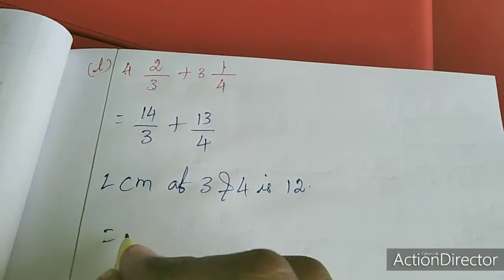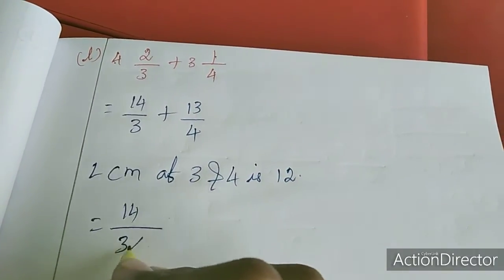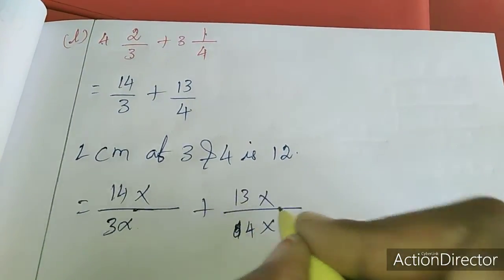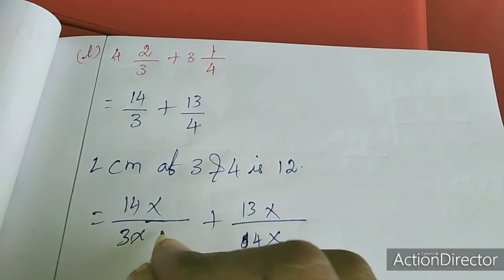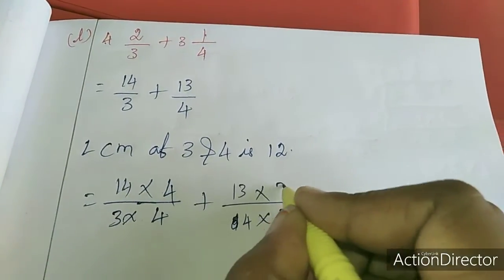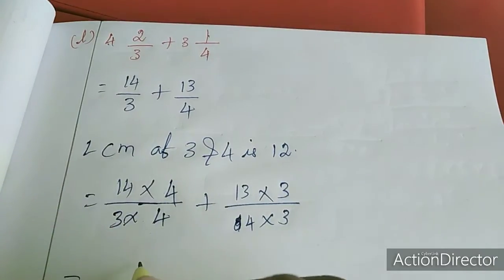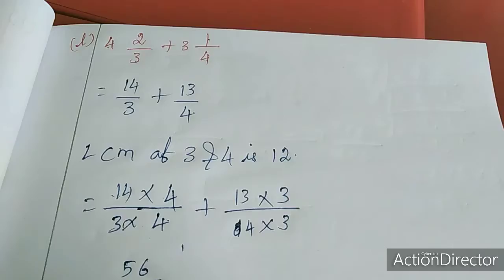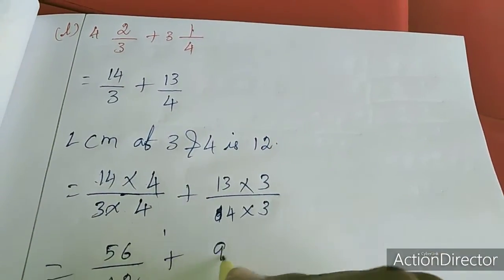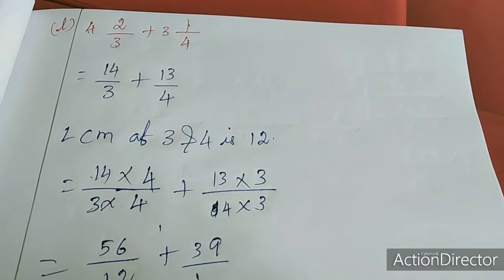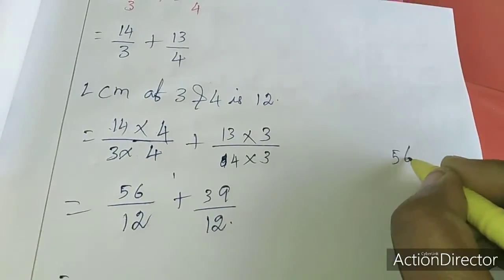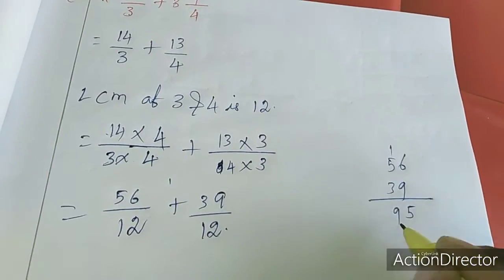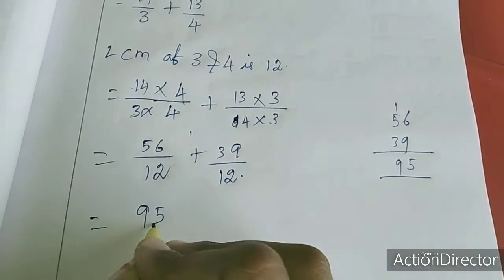Now I am going to equalize the denominator. 14/3 is the first fraction plus 13/4 is the second fraction. 3 into which number gives 12? 4. 4 into 3. So 56 divided by 12 plus 39 divided by 12. Now I am adding: 56 plus 39 = 95. So 95 by 12.